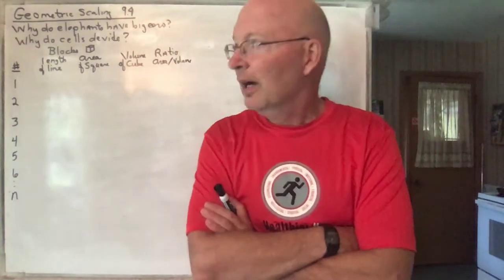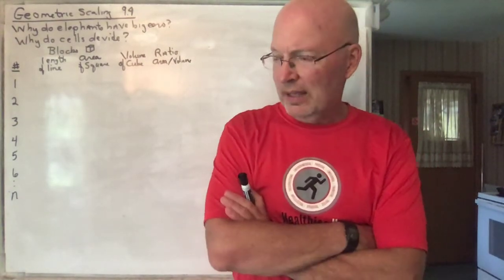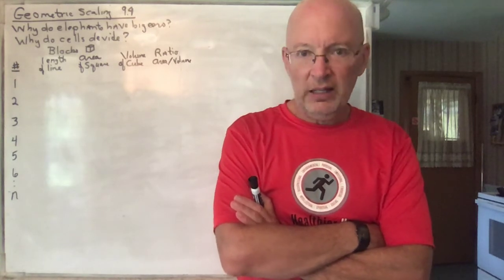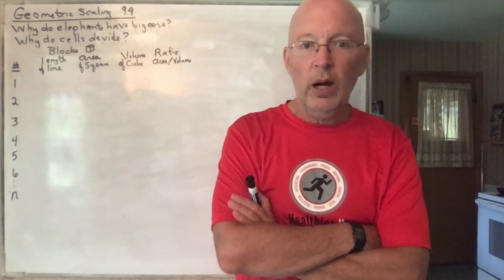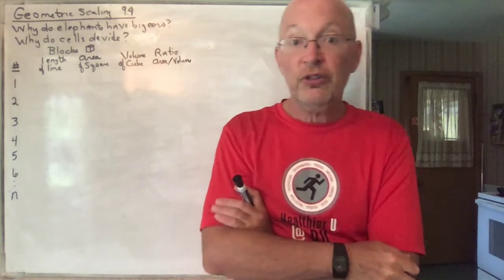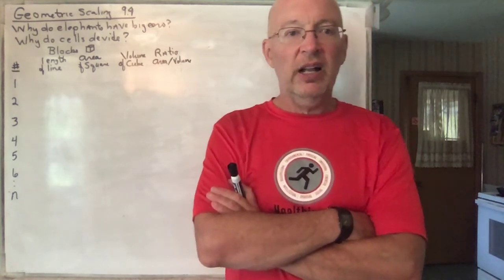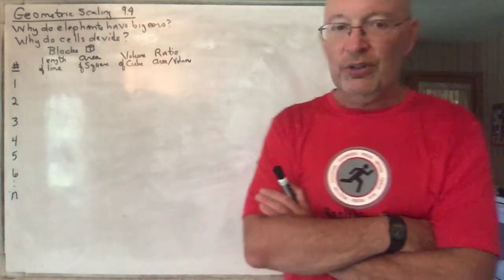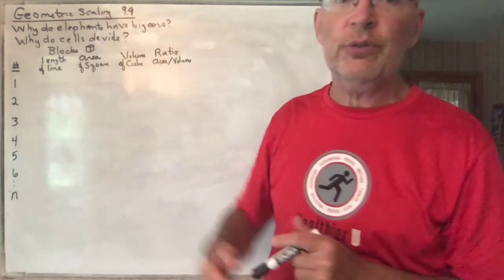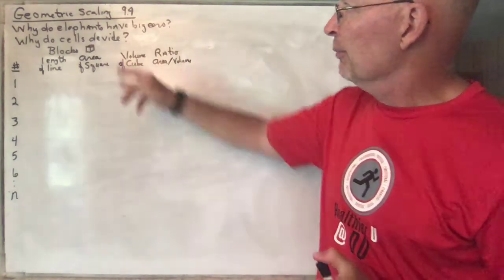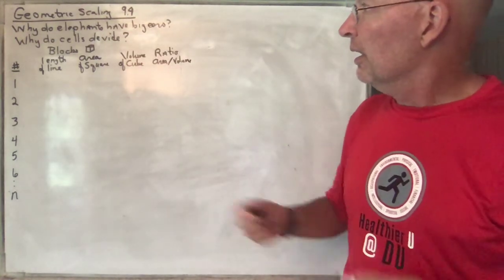Hello, everyone. Kind of a cool topic today. It's something in mathematics that does a good job of explaining why the world around us looks the way it does and why it acts the way it does. It's all based on something kind of simple. Let's dig into it. It's called scaling, geometric scaling. And for Davenport students, this is section 9.4 of the textbook.